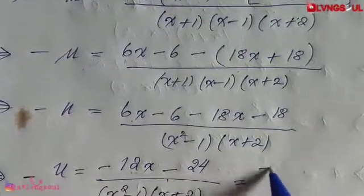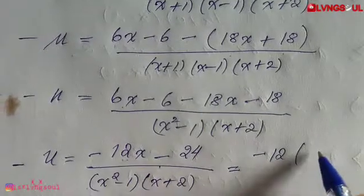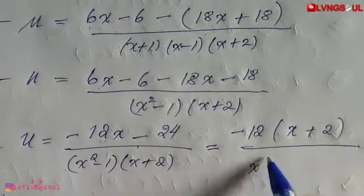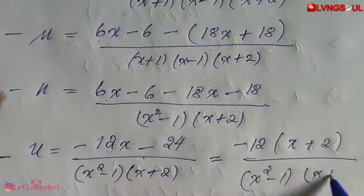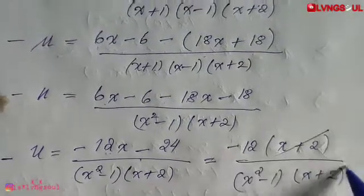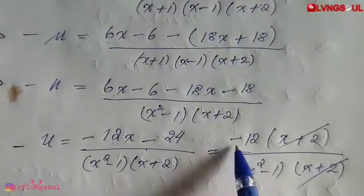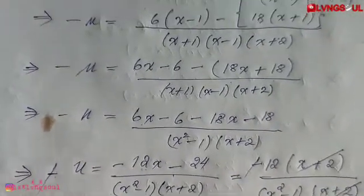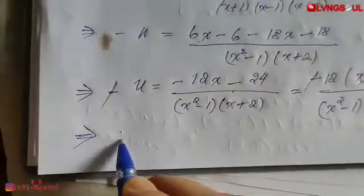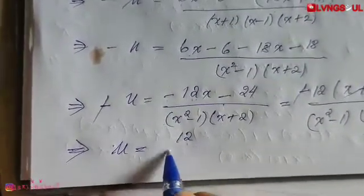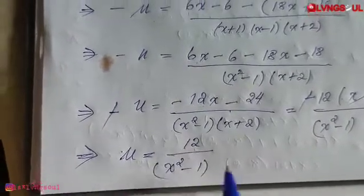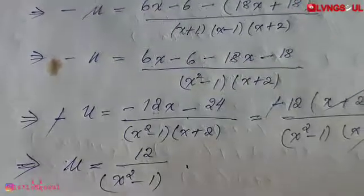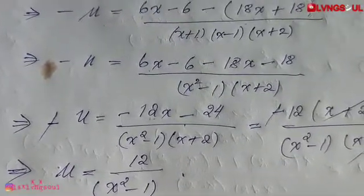We have minus 12 in the numerator over x squared minus 1 into x plus 2. We cancel x plus 2, so minus U equals minus 12 by x squared minus 1. Therefore, the required number to be subtracted is 12 by x squared minus 1.